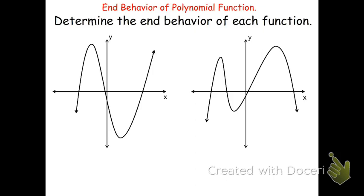Let's look at the first graph, the one on the left. On the left-hand side, the graph is falling. So as x approaches negative infinity — meaning as we move to the left — f of x is going down and approaching negative infinity. Whereas on the right-hand side, where x approaches positive infinity, the graph is rising, meaning f of x is approaching positive infinity. So as x goes to negative infinity, the graph moves down; f of x goes to negative infinity means the graph moves down.